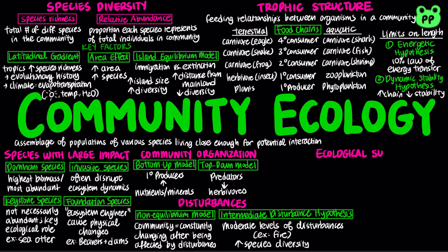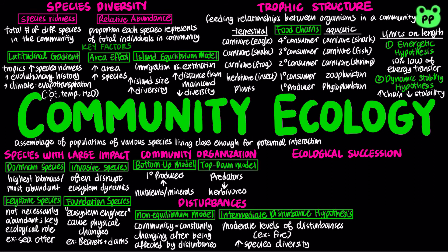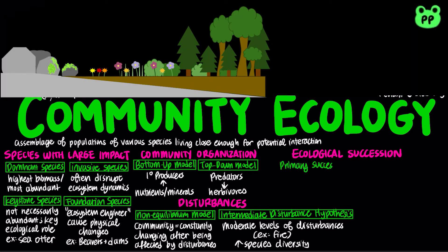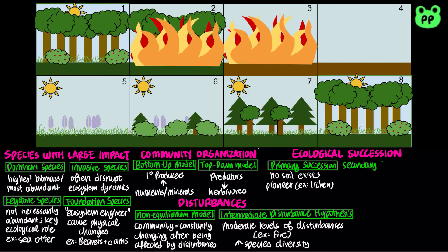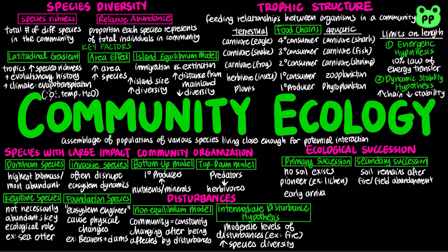Ecological succession is the sequence of community and ecosystem changes after a disturbance over time. Primary succession occurs where no soil exists when succession begins, involving pioneer organisms such as lichen to serve as the foundation of the community and build soil. Secondary succession begins in an area where soil remains after a disturbance or disaster such as fire or field abandonment.